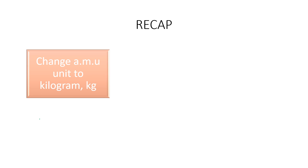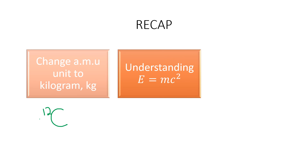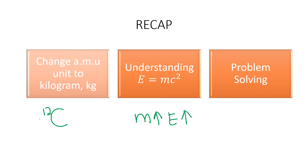We've come to the end of our lesson. Let's recap what we learned: first, how to change AMU unit to kilogram using carbon-12 as reference. Next, we understood the relationship between total energy released and mass defect — when mass defect increases, total energy released increases. Lastly, we did problem solving for a nuclear reaction question. That's all from me today. Hope you enjoyed the lesson, and thank you for listening everyone. Bye!